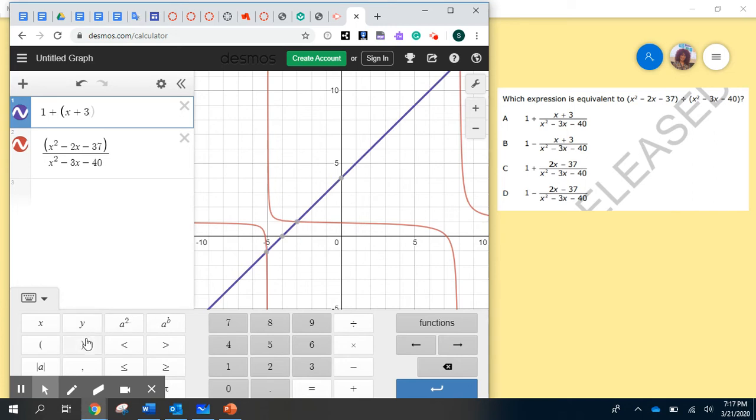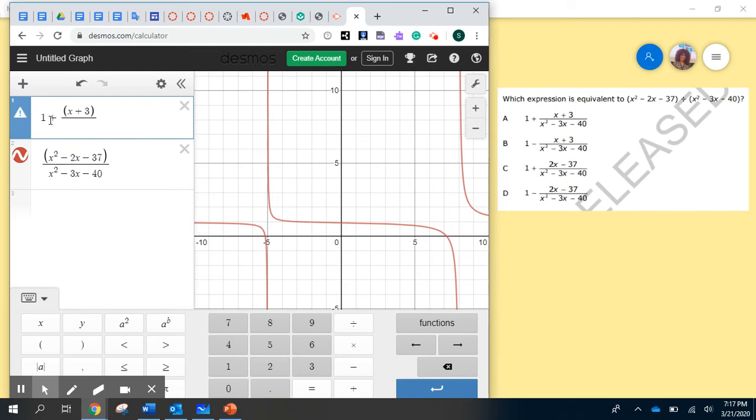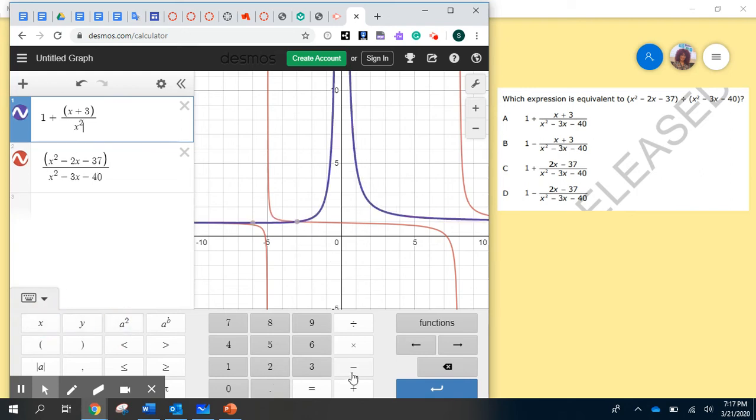Cool. Now, close parentheses and when you click on division, you see the division line will be below my numerator. And now, just insert the denominator, x squared minus 3x minus 40.